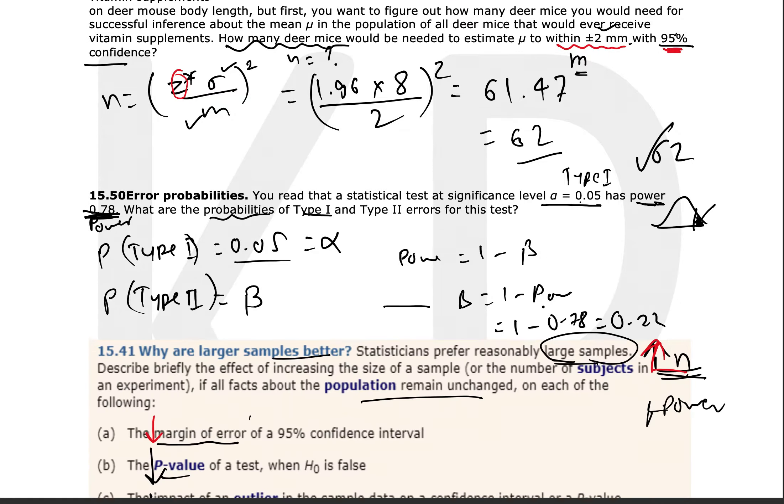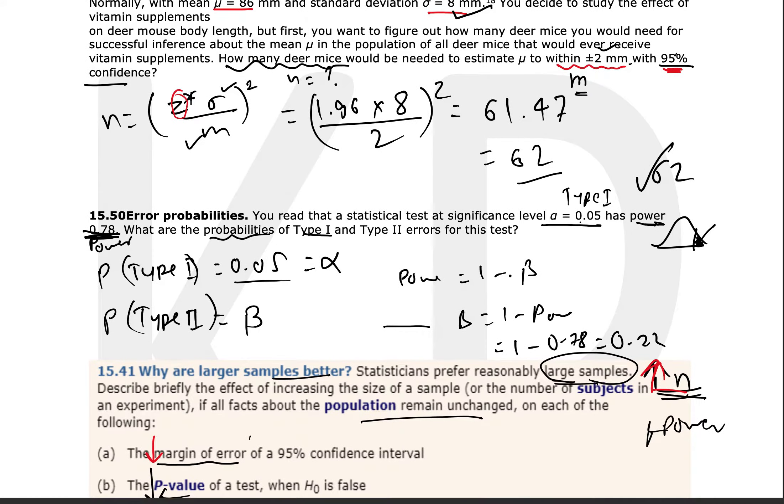The second question is also very easy. It asks you to find errors. A statistical test at significance level 0.05 has power of this much. So power is given to you. We know alpha is also nothing but Type 1 error.